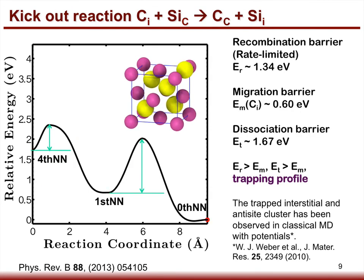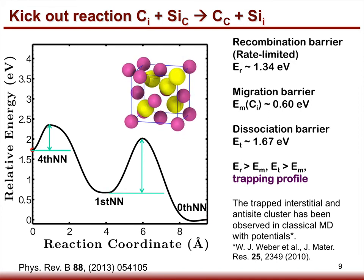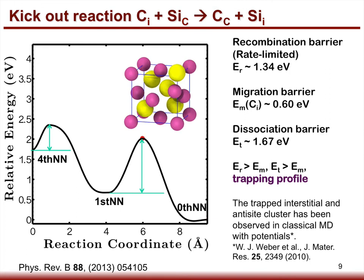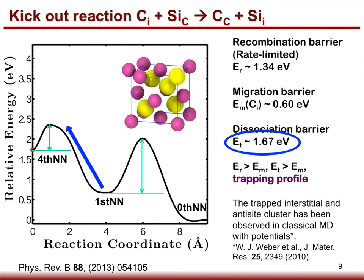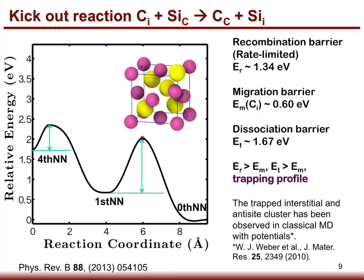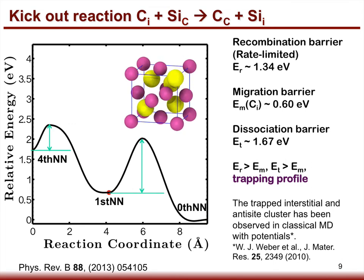Then let's look at the kick-out reaction where the carbon interstitial kicks out a silicon antisite and forms a silicon interstitial. The energy landscape has a trapping profile: the carbon interstitial atom tends to be trapped at the first nearest neighbor of the silicon antisite, due to a high recombination barrier of about 1.34 eV and a high dissociation barrier of 1.67 eV. Both are higher than the carbon interstitial migration barrier of 0.6 eV. Thus, it can form a metastable carbon interstitial–silicon antisite cluster. Such a cluster has been observed in classical MD simulations.